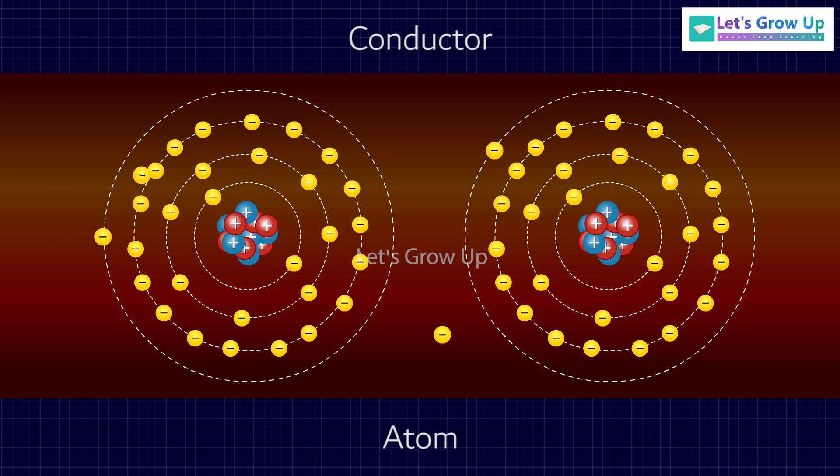See this animation, how the electrons are passing here. The electrons pass electrical energy easily from one particle to another and transfer energy in the form of electricity.